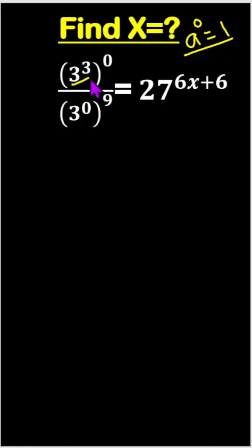Now look, here is (3^3)^0 and here (3^0)^9 equals 27^(6x+6).